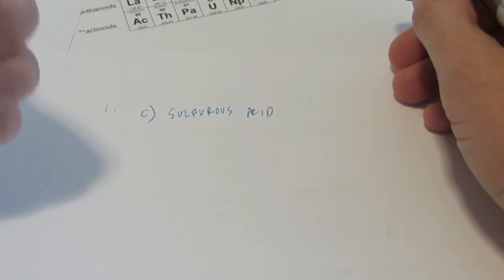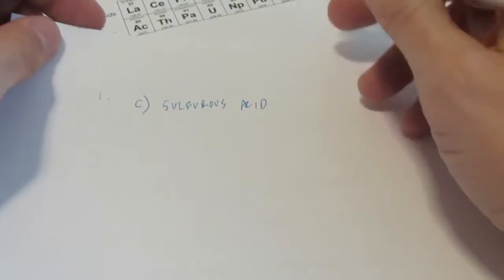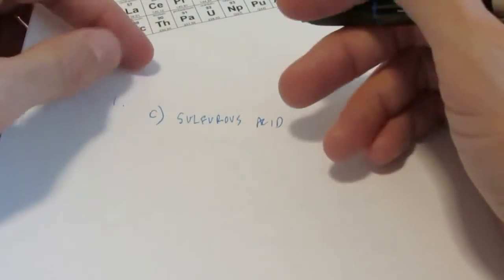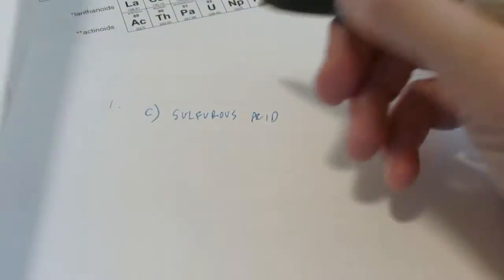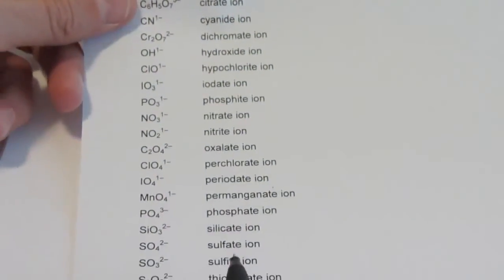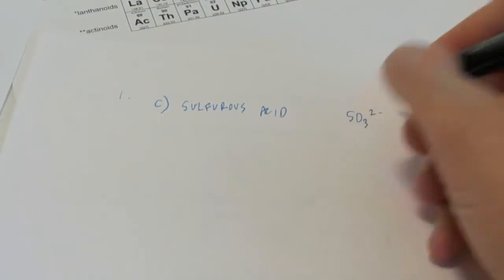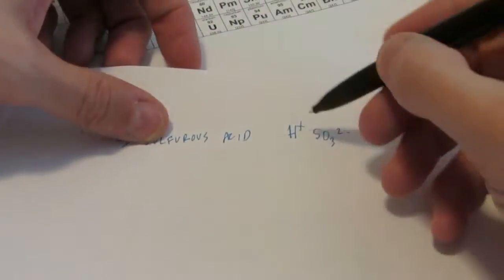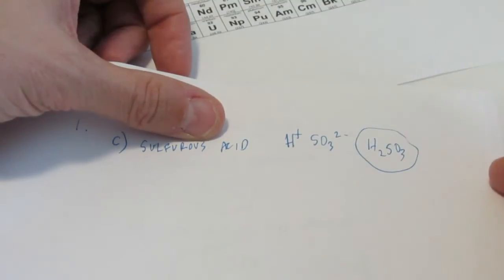Sulfurous acid — I know it's an acid, so I'll use my acid rules. It doesn't start with hydro, so I know it's an oxyacid or ternary acid. -ous acids come from -ite radicals. So sulfurous comes from sulfite. Sulfite is SO₃²⁻. To be an acid, it's bonded to a hydrogen acting like a metal with a 1+ charge. H is 1+, SO₃ is 2−. So the formula is H₂SO₃ for sulfurous acid.